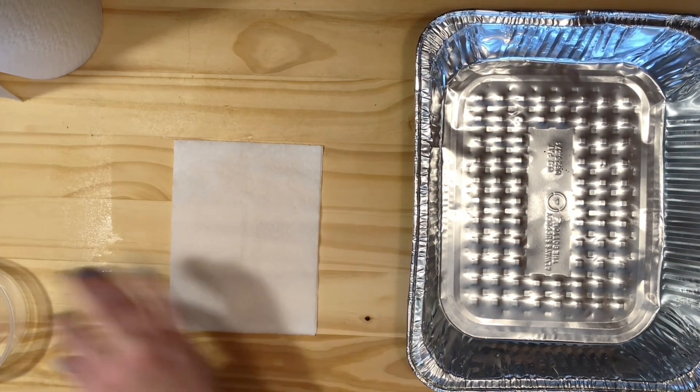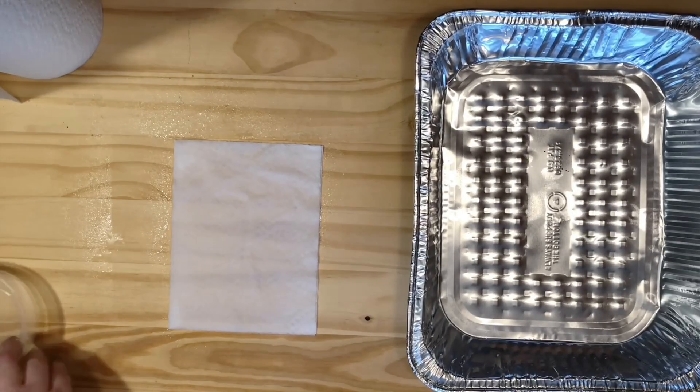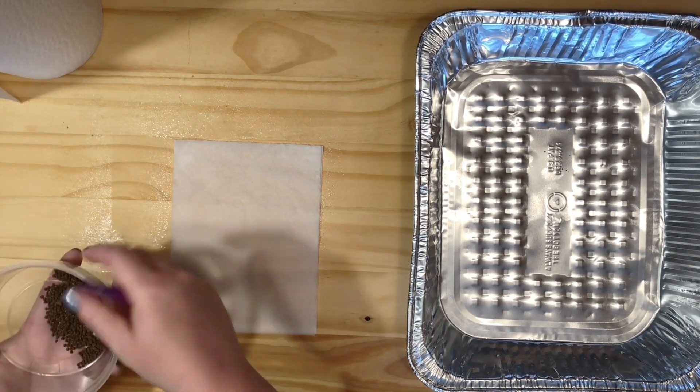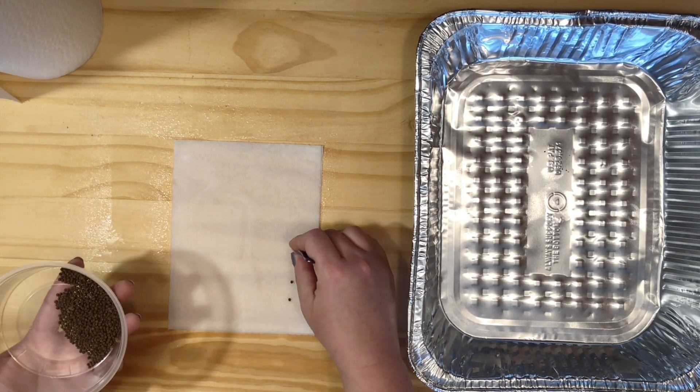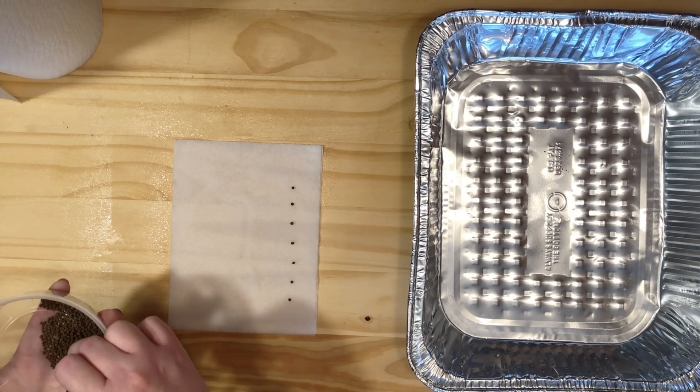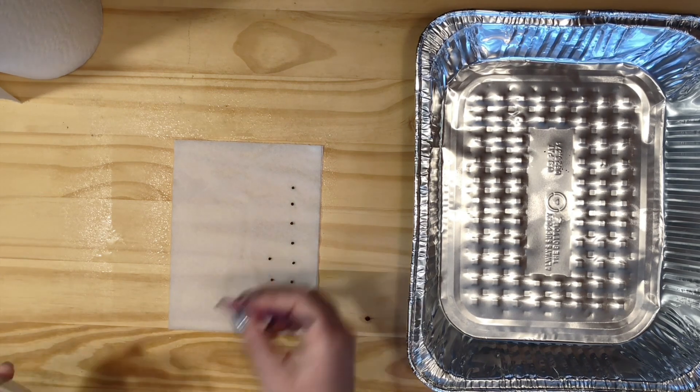This year I'm testing so many seeds that I'm going to upscale my testing. I'm still going to use the paper towel method, but I'm going to be rolling up the paper towels in one of these metal pans. This is very similar to the method I've used in the past, but instead of the paper towels being flat, they're rolled up. Then I'll put a little plastic wrap over the top to make sure they don't dry out too quickly.